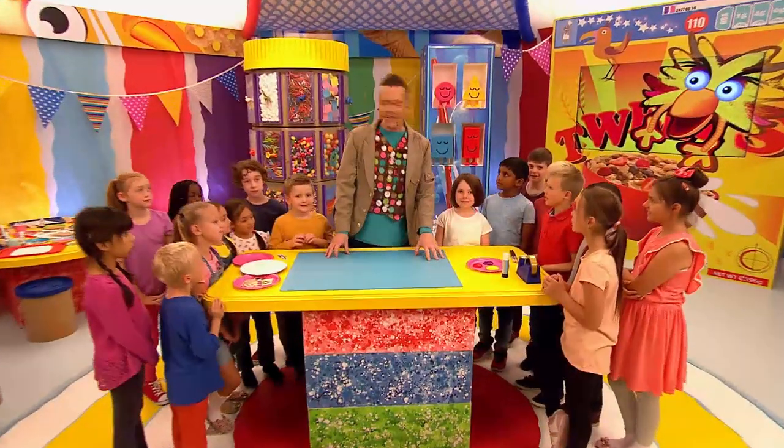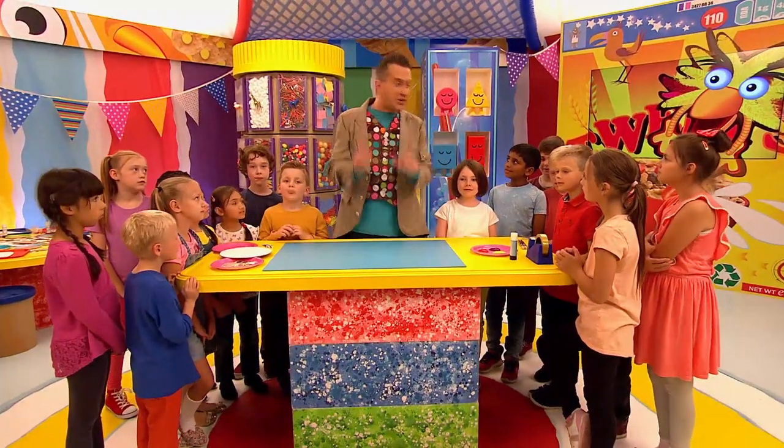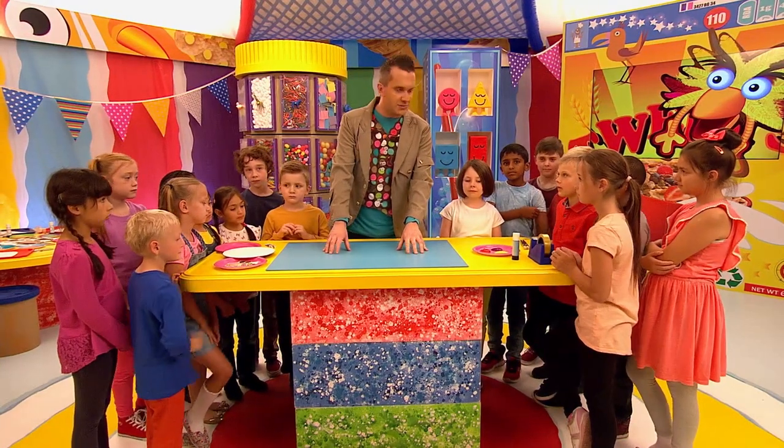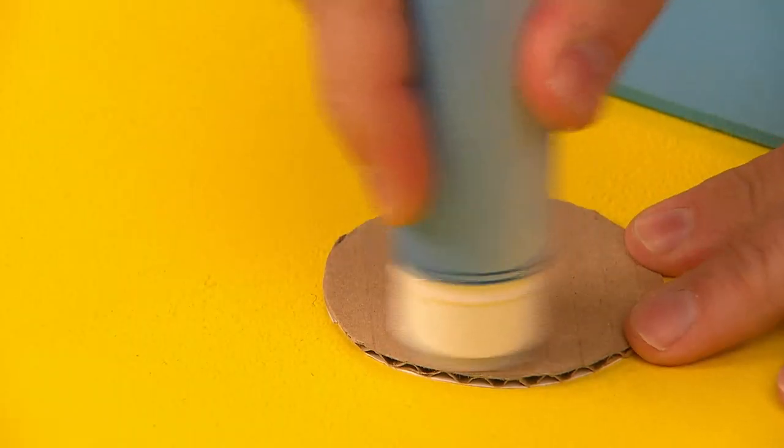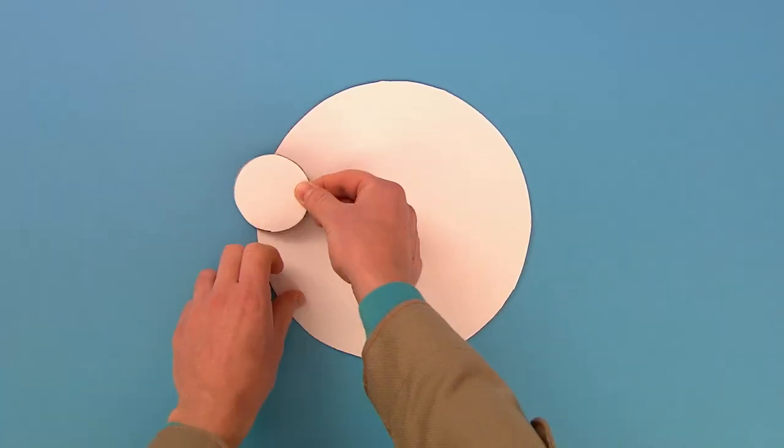And we'll also need some glue and some sticky tape. Now this can get a little bit messy, so it's a good idea to put down some old paper or some newspaper first. I'm going to start by bringing in this card circle. And now I'm going to use some glue to stick on a smaller circle for the mouth. Put a bit of glue on that. Let's stick it on.